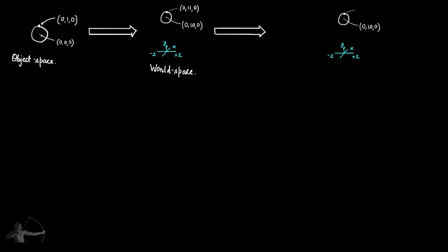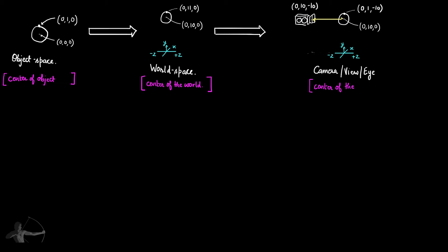We bring the camera into the scene and place it at 10 units in y and negative 10 units in z, so the camera is at 0, 10, negative 10. The scene is rendered from the camera's viewpoint, so we want to know where the vertex is placed in regard to the camera. We find the distance from the camera to the object, and the position of this vertex becomes 0, 1, negative 10. This coordinate space is called camera space, view space, or eye space — they are all names for the same space, defined in regard to the center of the camera.